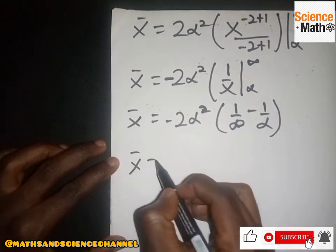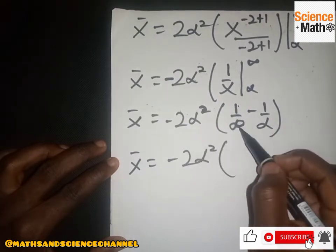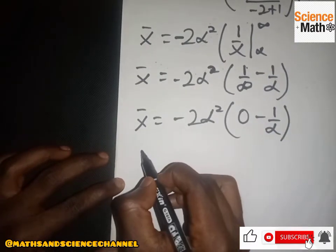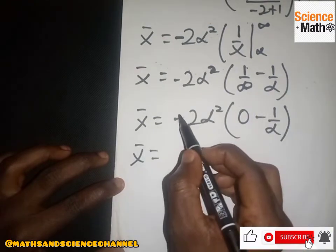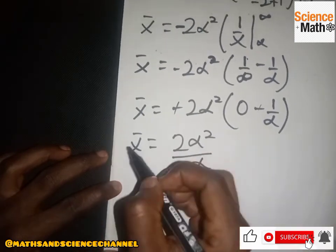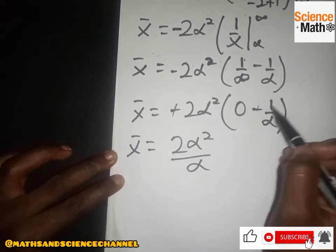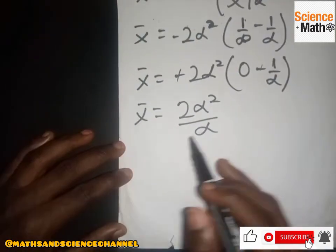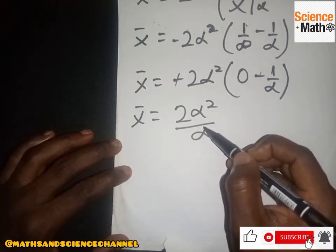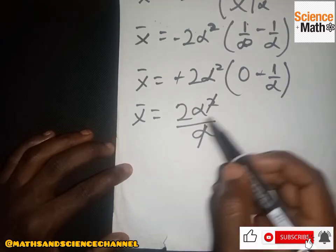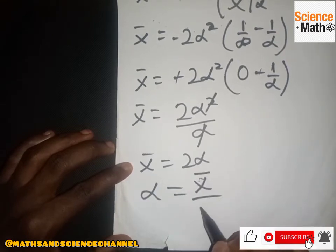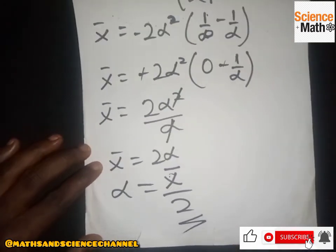Now 1/∞ is 0, so we have −2α² times (0 − 1/α). The two negatives cancel, leaving 2α²/α, which simplifies to 2α. So x-bar equals 2α. Making α the subject, we cancel one α and get α = x-bar / 2, which is the mean divided by 2. This is the method of moments estimator for α.